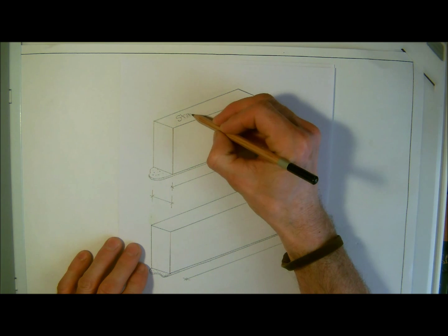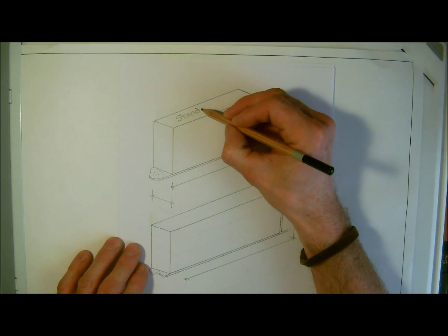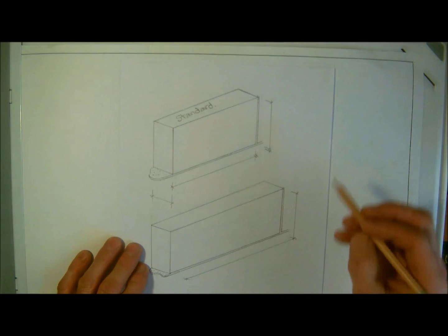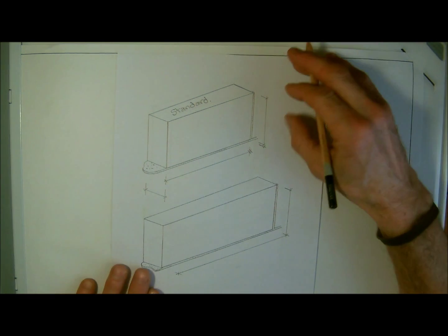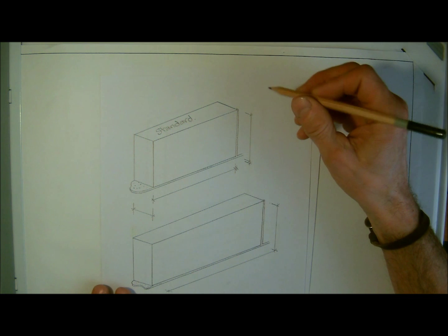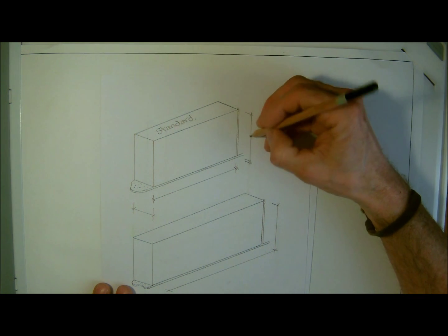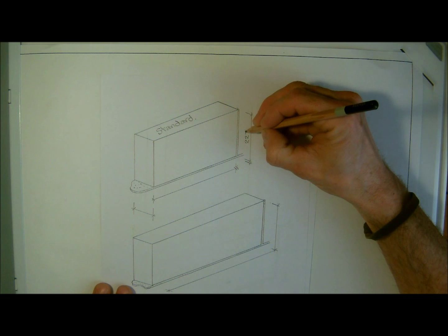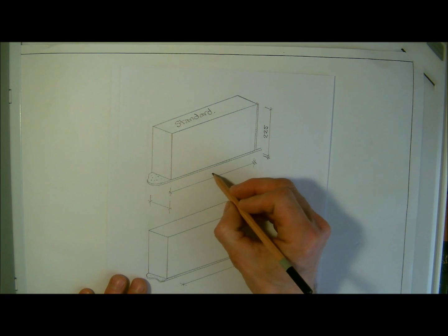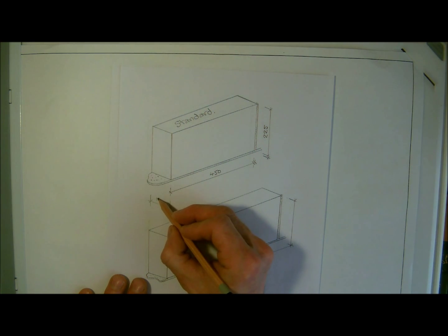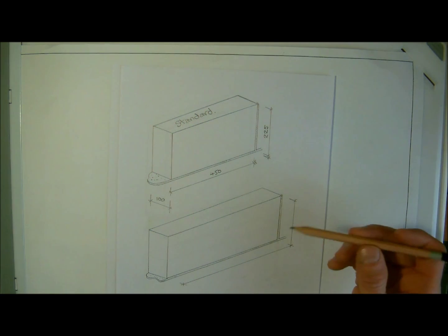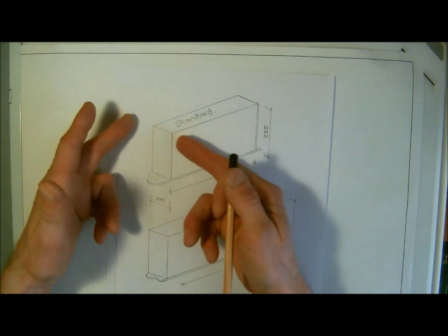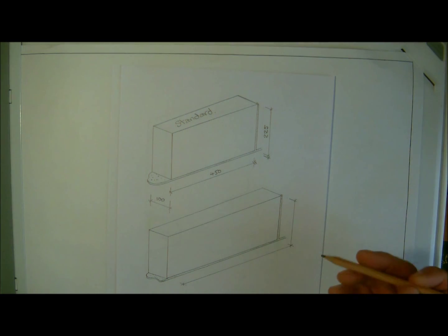These are the same for aircrete blocks and concrete blocks. So we have our standard block, and this, for our calculations, we are going to include the 10mm mortar joint. So the standard block with a mortar joint is going to be 225, and the length of it will be 450. The blocks are always, in what we're going to be doing here, going to be 100mm, but we have to realize that you can get blocks that are 140s, 150s, and 215s as well.